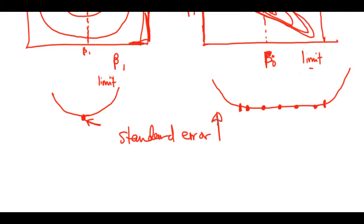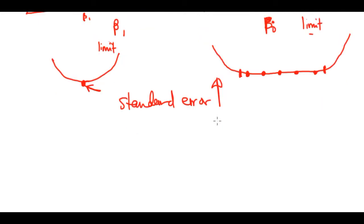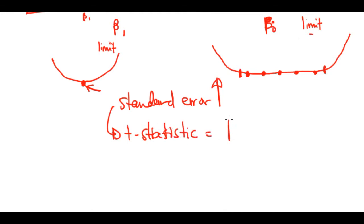This uncertainty results in a great deal of instability in our coefficient estimates — beta naught and beta one. This reduction in accuracy of the coefficient estimates also causes our standard error to grow, because we are not certain which value of beta naught or beta one we should expect.